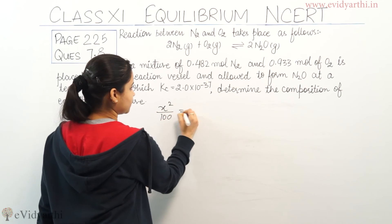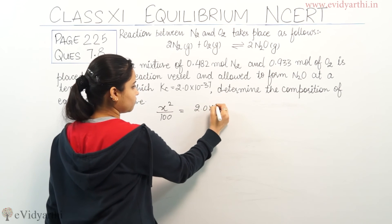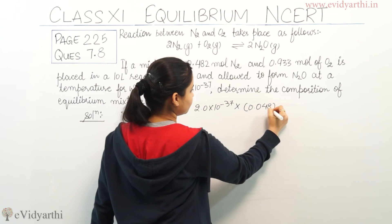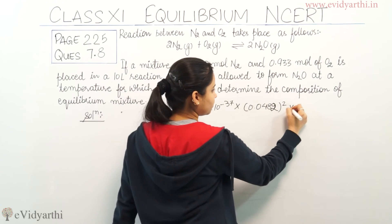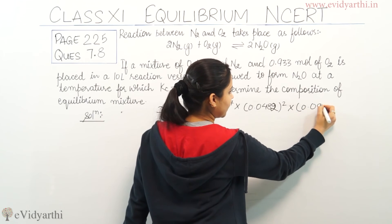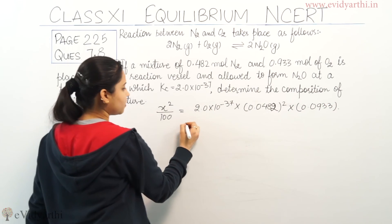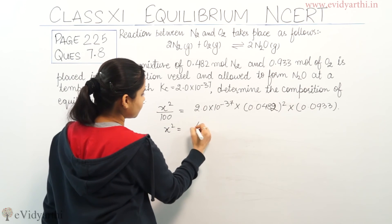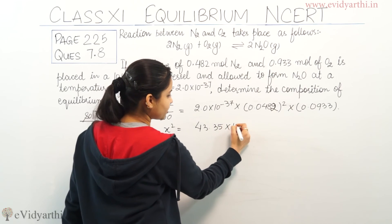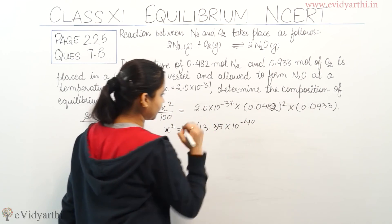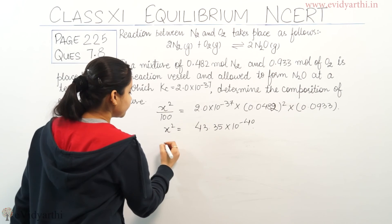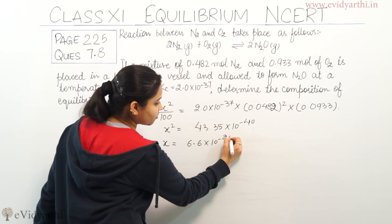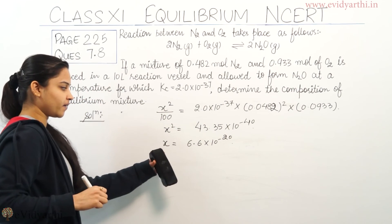Solving the equation, X² equals approximately 43.35 × 10⁻⁴⁰. Therefore, X equals approximately 6.6 × 10⁻²⁰. This is the value of X we have found.